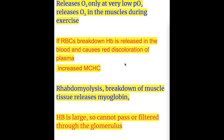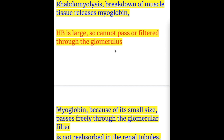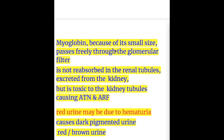If RBCs break down, hemoglobin is released in the blood and causes red discoloration of plasma. Rhabdomyolysis — the breakdown of muscle tissue — releases myoglobin into the circulation. Hemoglobin is large, so it cannot pass or filter through the glomerulus. Myoglobin, because of its small size, passes freely through the glomerular filtrate and is not reabsorbed in the renal tubules, and is excreted from the kidney.